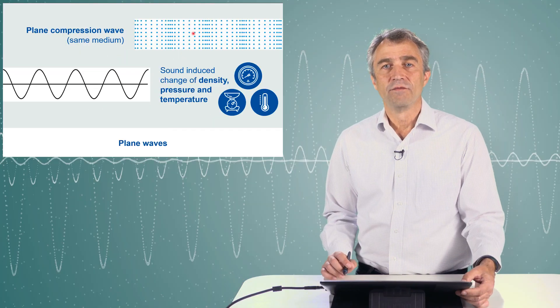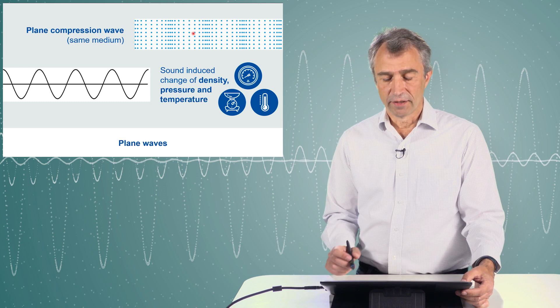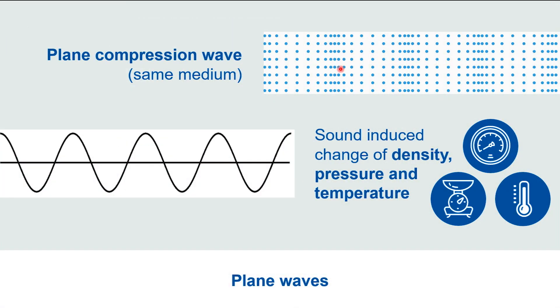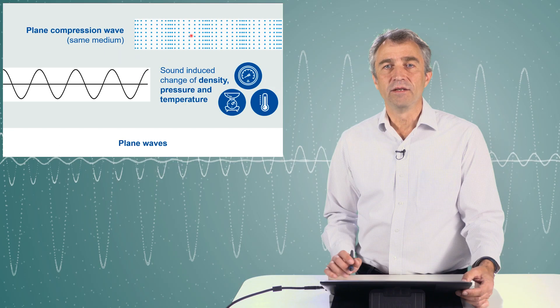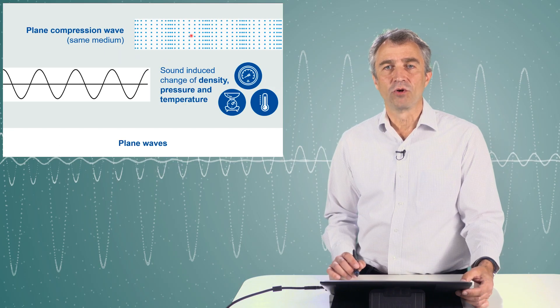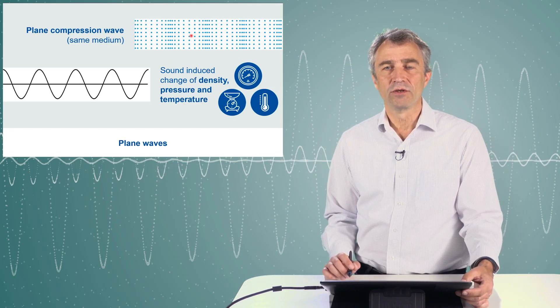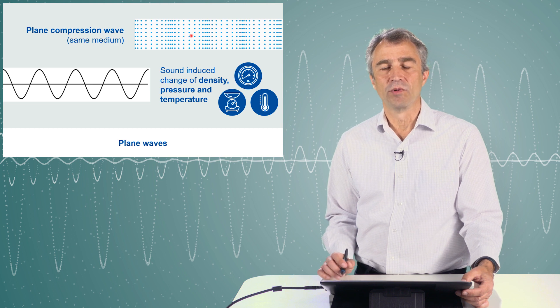When we now consider variations of pressure and density as illustrated in the upper plot here, we see the density change. There is a higher density zone illustrated by more bubbles in a small region or less bubbles in a small region indicating low and high pressure zones. In this lecture we will derive the theory for calculating those pressure changes. At the same time we will also find density changes and temperature changes.